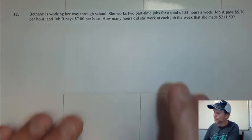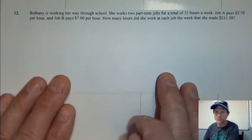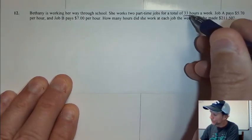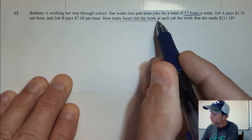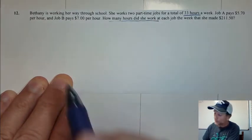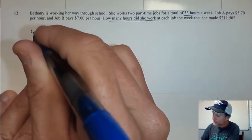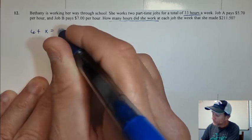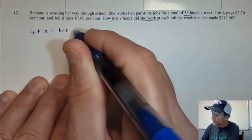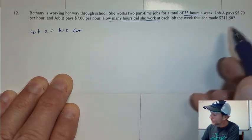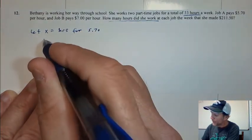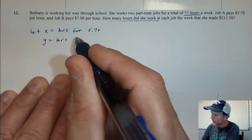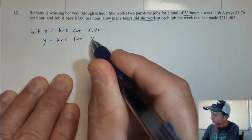This person, Bethany, is working two jobs to get a total of 33 hours. And then it says, how many hours did you work at each job? So I'm going to let X equal hours for the job that pays $5.70, and then let Y equal hours for the job that pays $7.